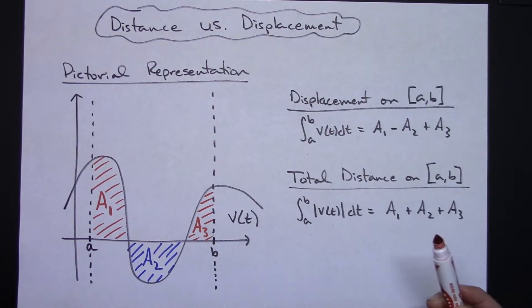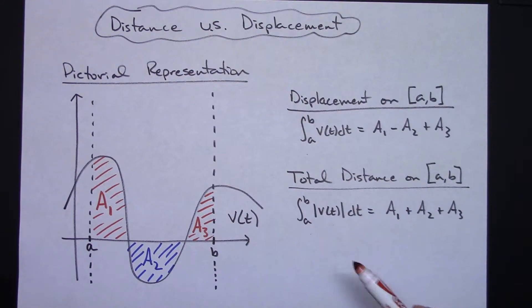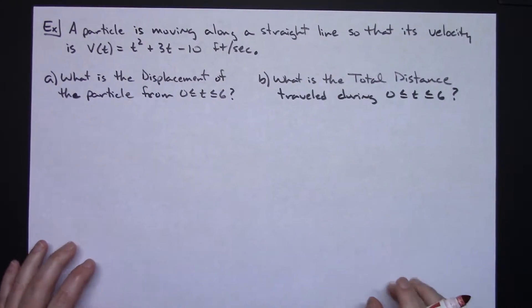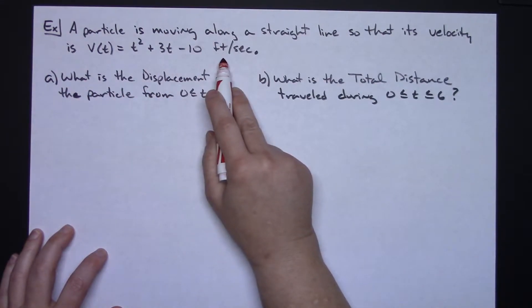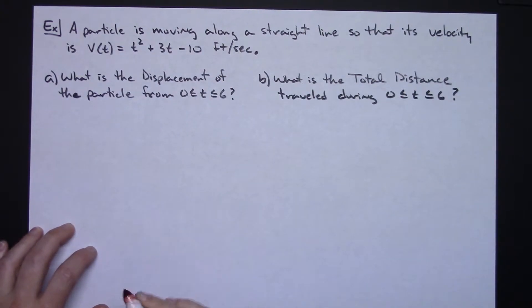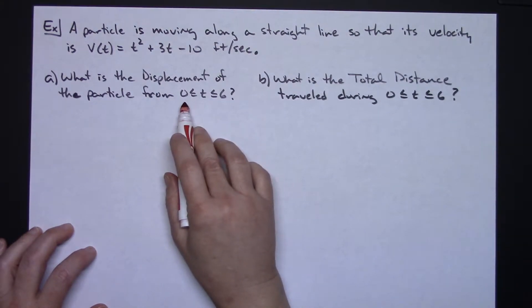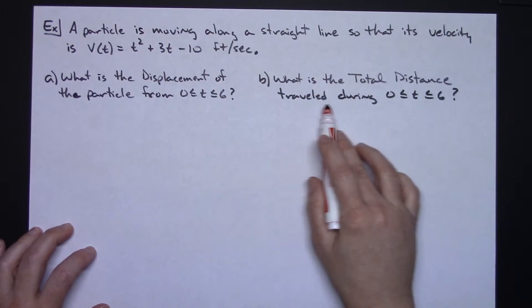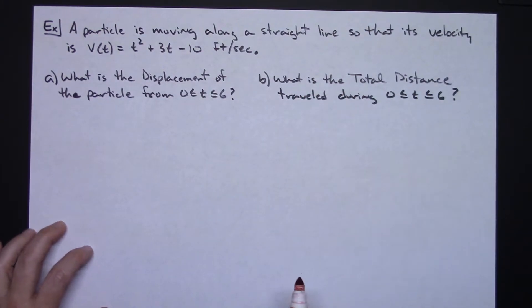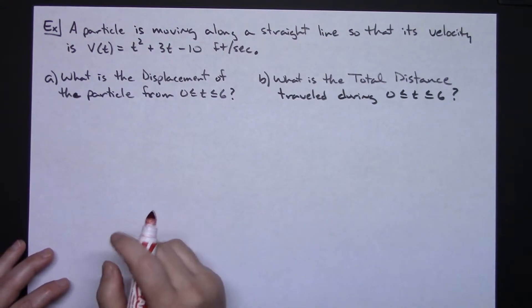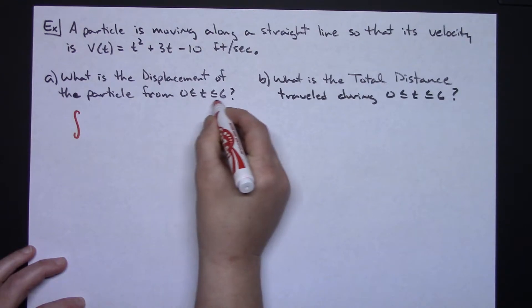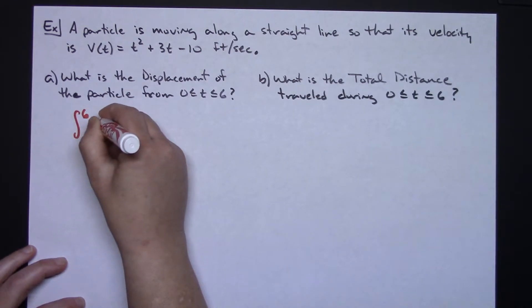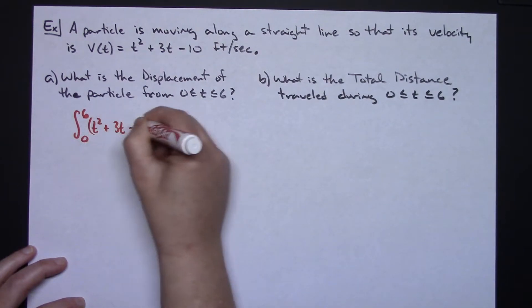I'm going to show how to work it out by hand, not using a calculator, so that you can see how to come up with that total distance. So let's take a look at a pretty straightforward simple example. A particle is moving along a straight line so that its velocity is v of t equals t squared plus 3t minus 10 feet per second. Part A: what's the displacement of the particle on the interval from zero to six?